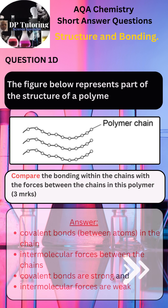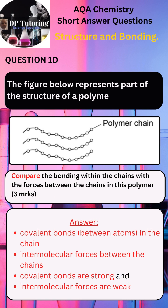The answer for Part D is on the screen. Please pay attention to the terms used about bonding within the chains and between the chains. 1. Covalent bonds between atoms in the chain. 2. Intermolecular forces between the chains. 3. Covalent bonds are strong, and intermolecular forces are weak. These intermolecular forces are the forces between the chains — this is similar when describing the forces between the sheets and layers in graphene.